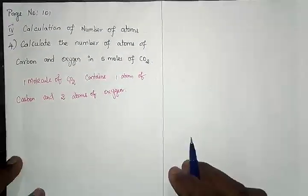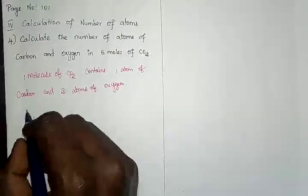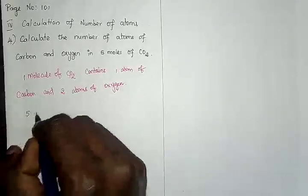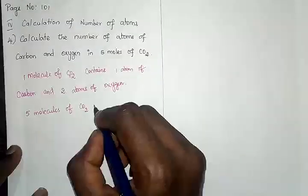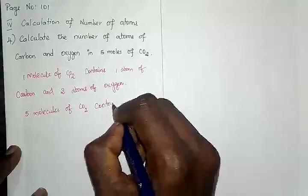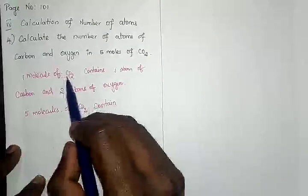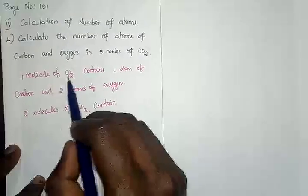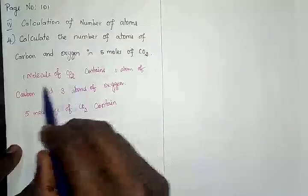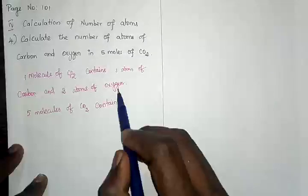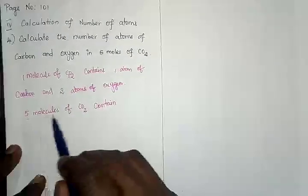Now, what if I give five molecules of carbon dioxide? One molecule contains one carbon atom, so one into one is one atom of carbon. And one into two gives two atoms of oxygen. So five molecules of carbon dioxide — we need to scale up from here.